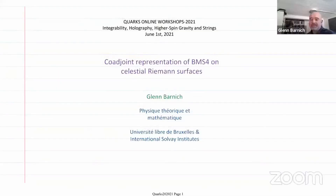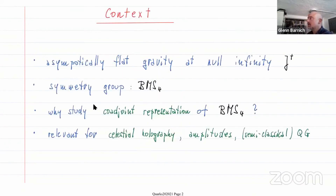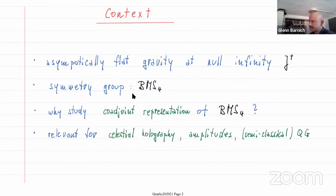Let me thank the organizers for the opportunity to speak at this prestigious conference. My talk is in the context of asymptotically flat gravity at null infinity. The symmetry group in this context is the so-called BMS4 group, and what I will try to show you today is how to construct in detail the co-adjoint representation of this group.